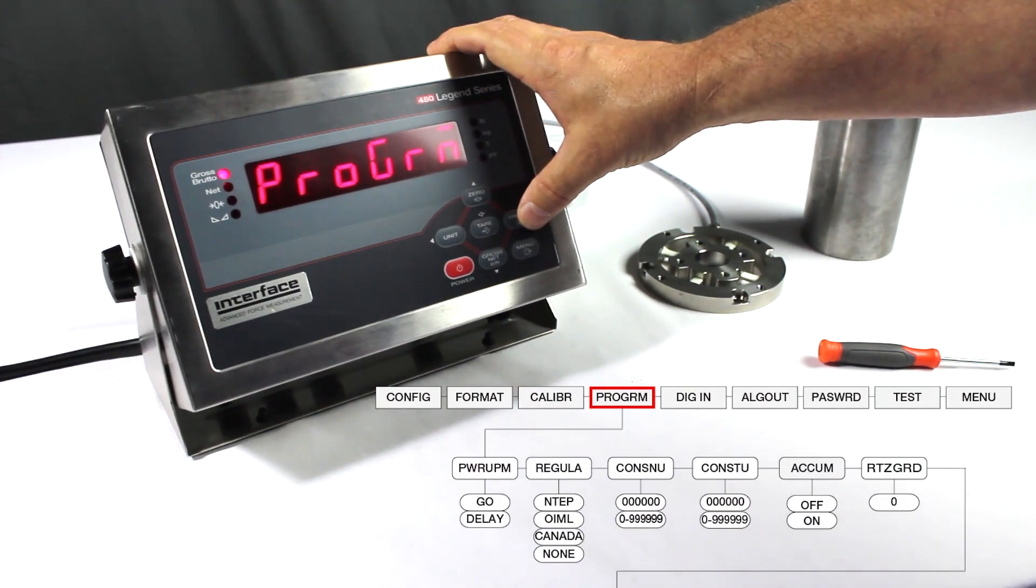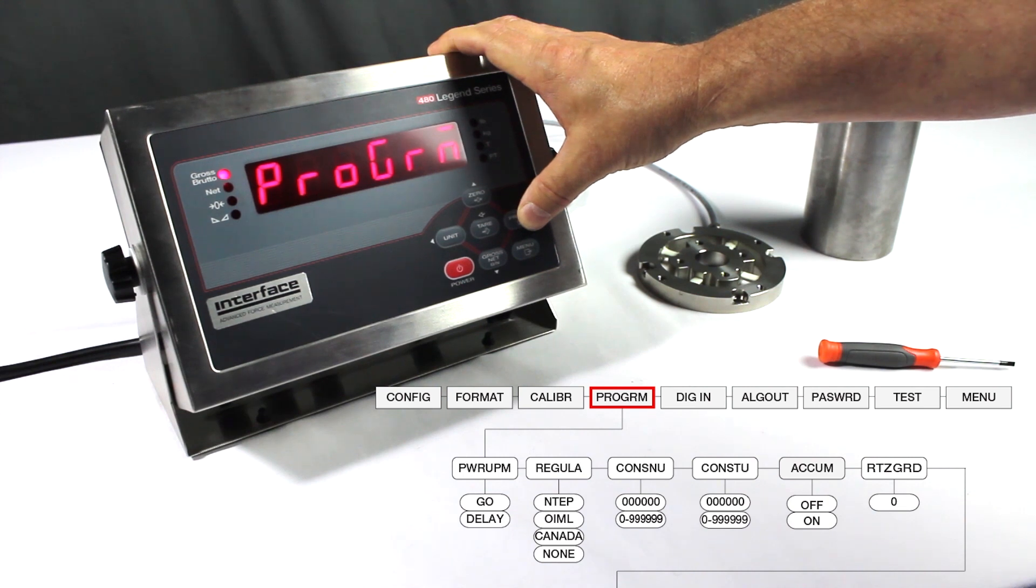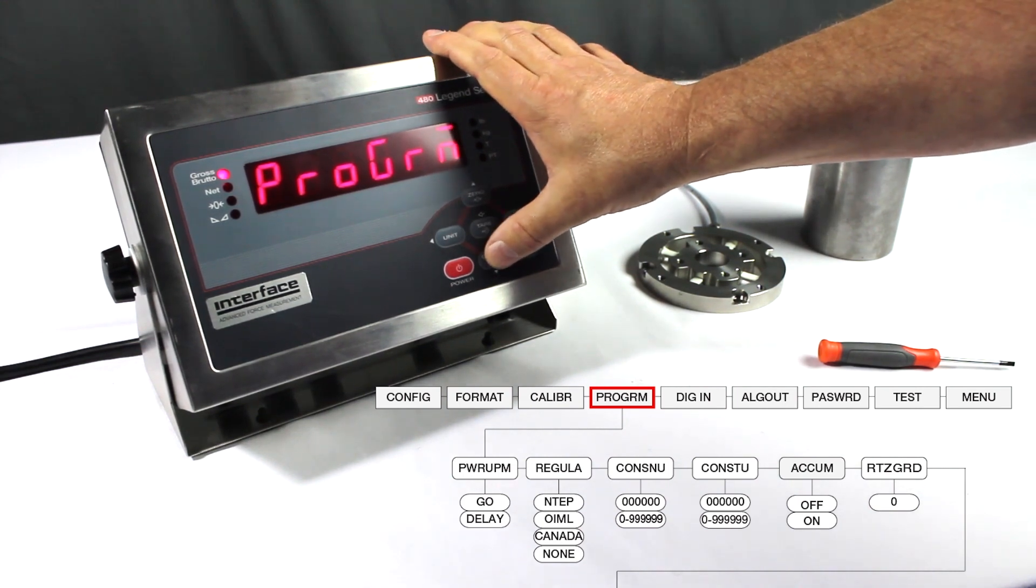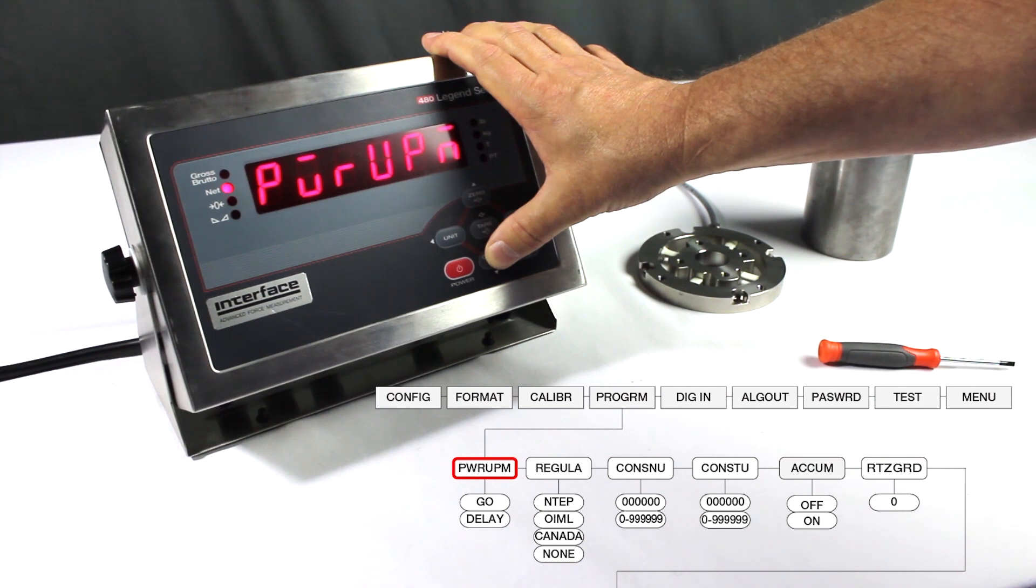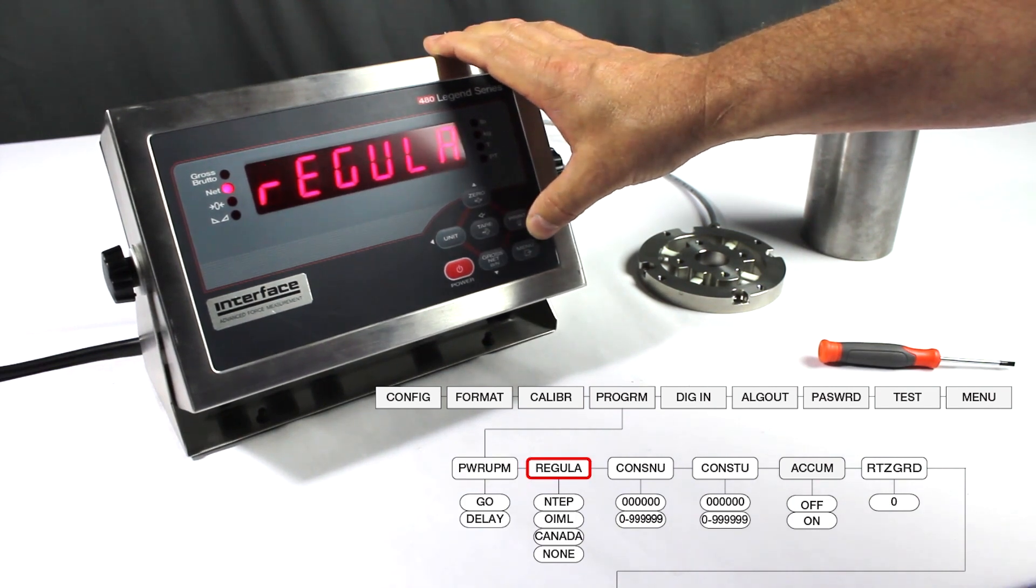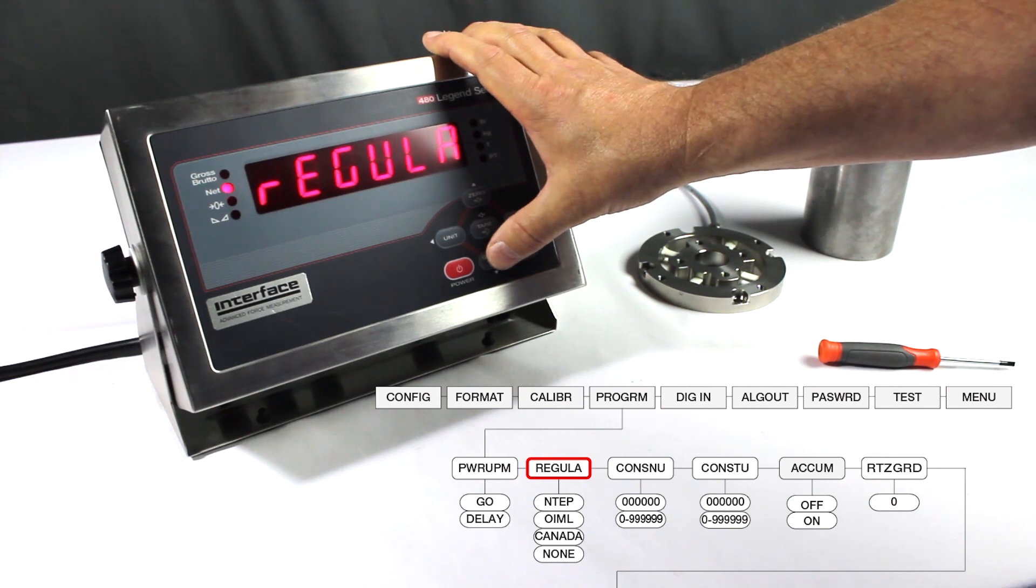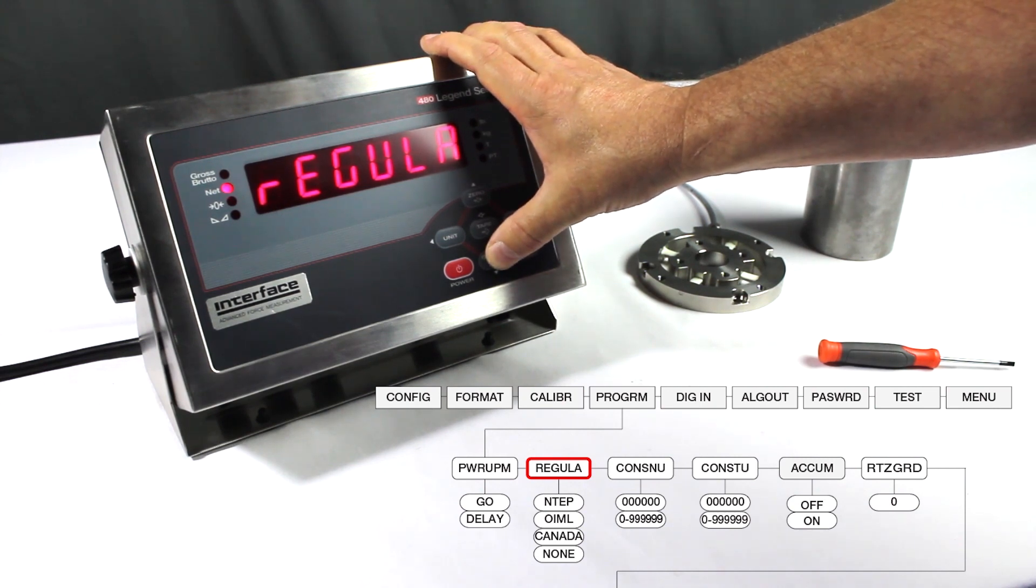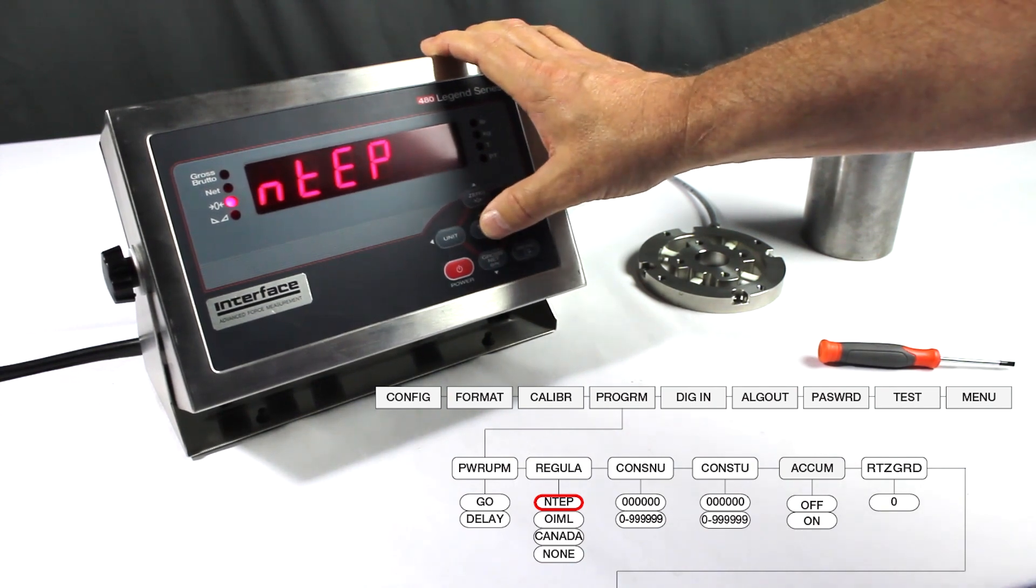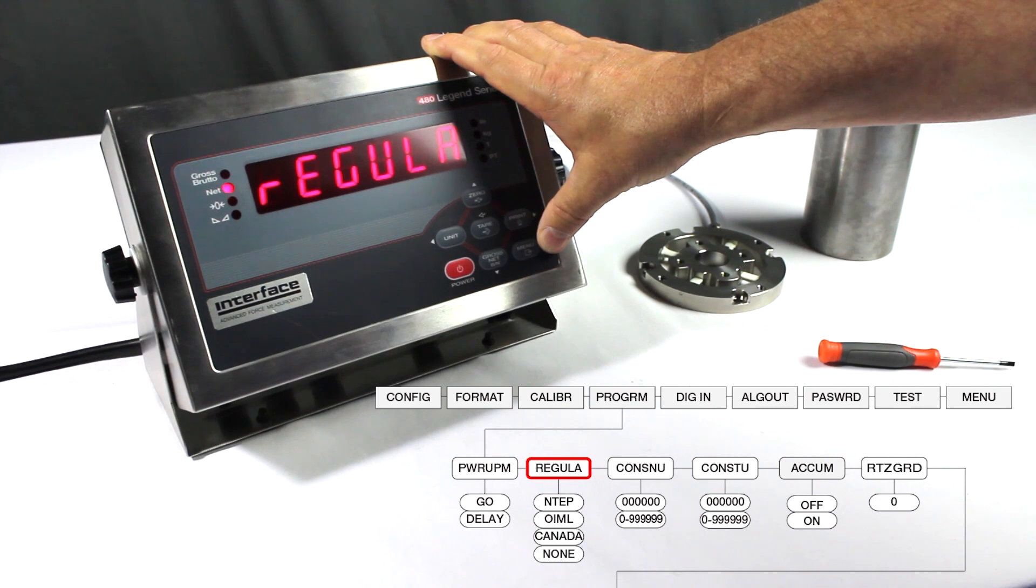What we're going to do here is we're just going to set it in NTEP mode, which basically gives you bipolar operation. So we're at the program step. We're going to move down to power UPM, but we're not going to stay there. We're going to move to the right one to regular, which is going to have the same category for NTEP in it, which is where we want to go. There's NTEP. And we're going to hit enter, which is the tare button. When we do that, we basically now told it, be in NTEP mode, which is bipolar mode.